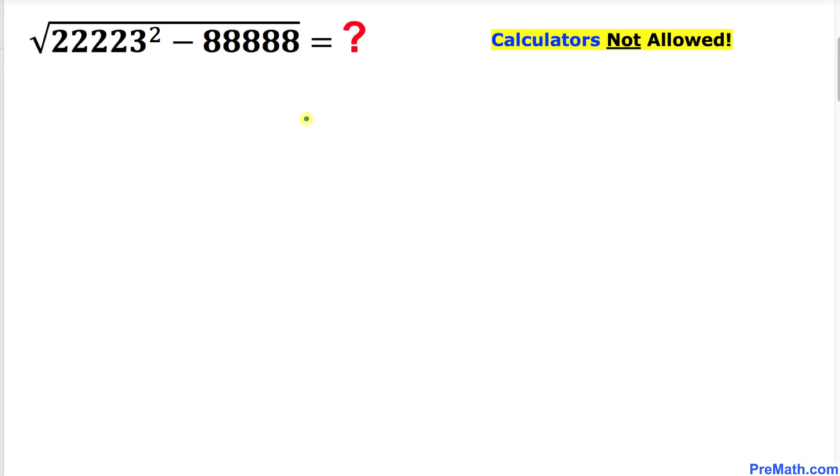Welcome to pre-math. In this video lesson we are going to find the value of this given problem: square root of 22,223 squared minus 88,888, and we are not supposed to be using calculators.